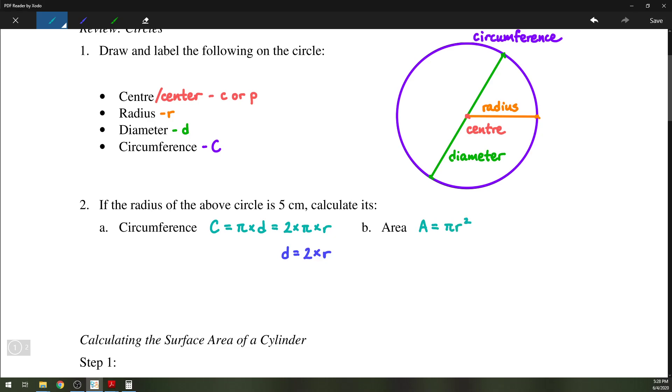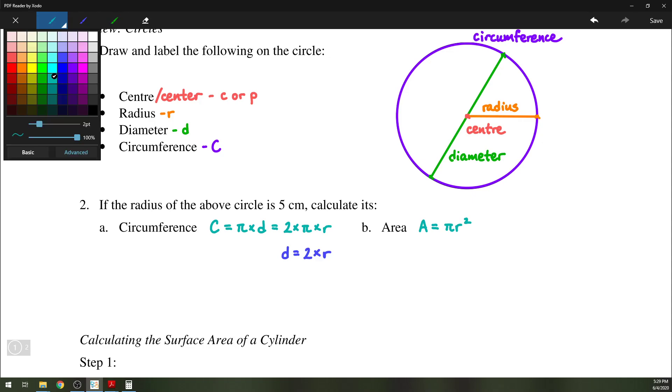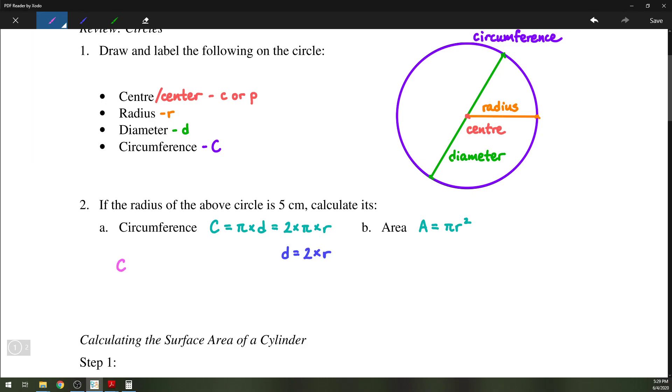So it says here, for example 2, if the radius of the above circle is 5 centimeters, we're going to calculate the circumference and the area. Let's go ahead and do that. We have C equals 2 times pi times the radius of 5, which is equal to 10 pi. 2 times 5 is 10. Then we can evaluate 10 pi, and if we round to the nearest hundredth, we will have 31.42 centimeters.